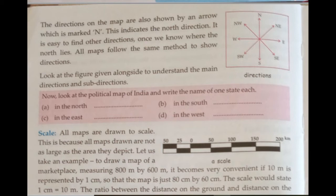Now look at the political map of India and write the name of one state in the North, in the East, in the South, and in the West. You can tell us in the comments which state is in the North, South, East, and West on the political map.